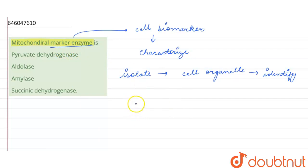For example, for plasma membrane, we have nucleotidase enzyme. For lysosome, which is a type of cell organelle, we have marker enzyme as acid phosphatase.